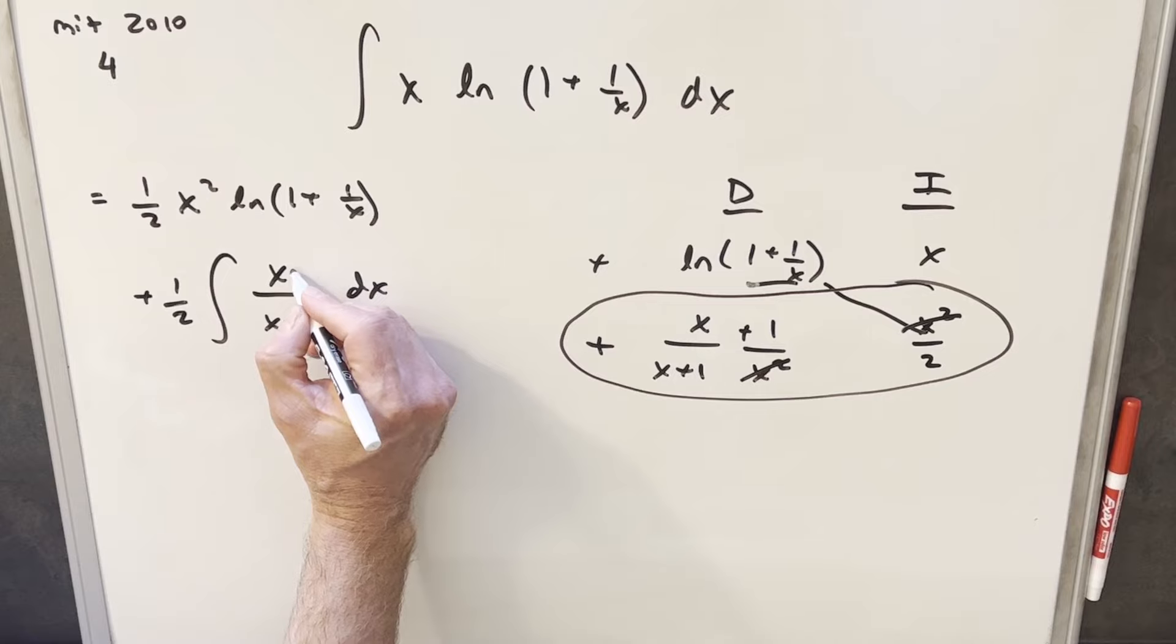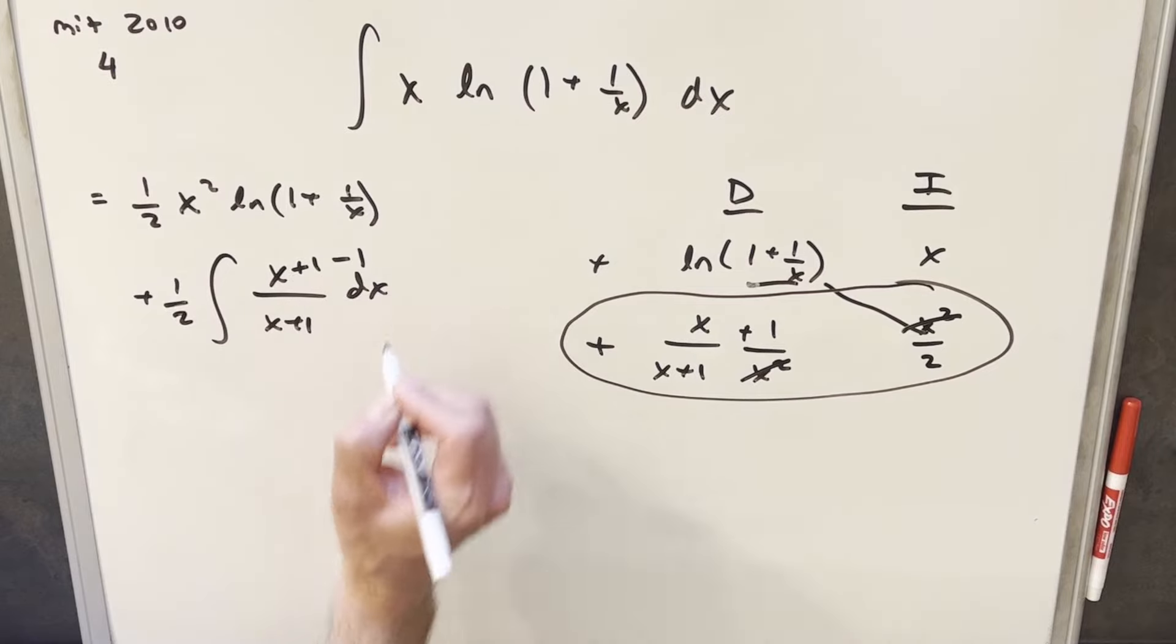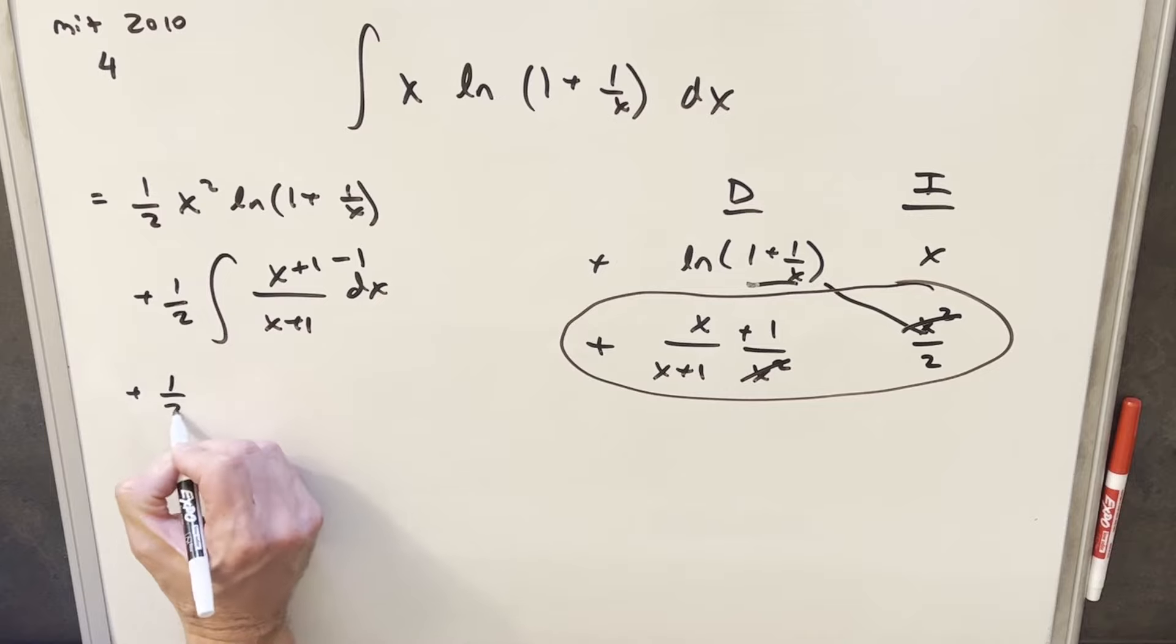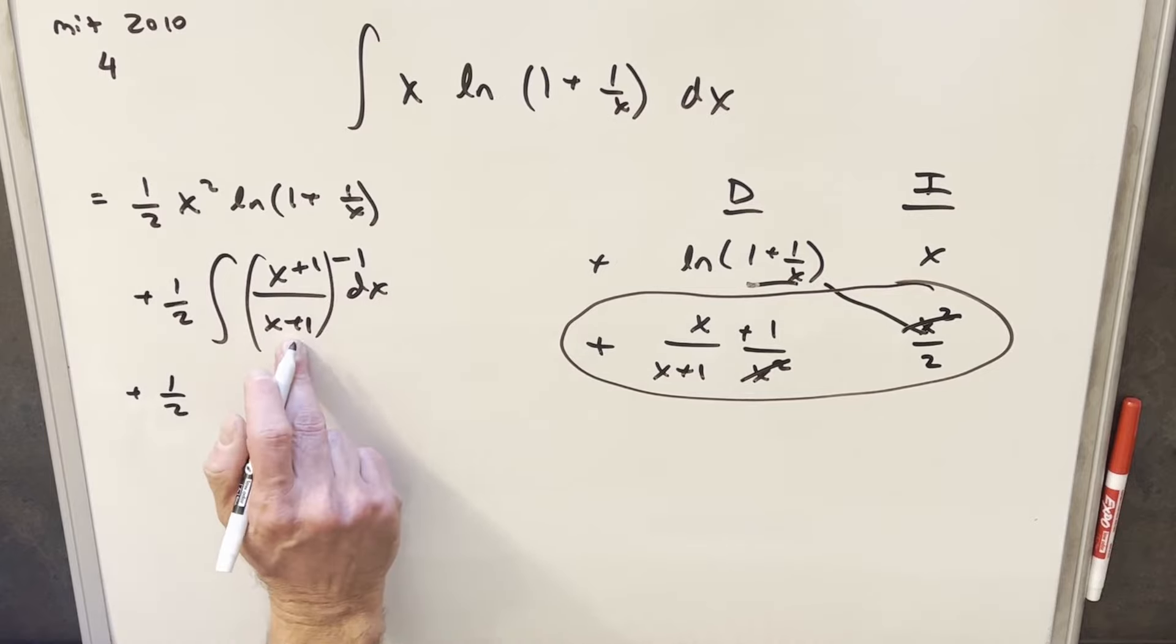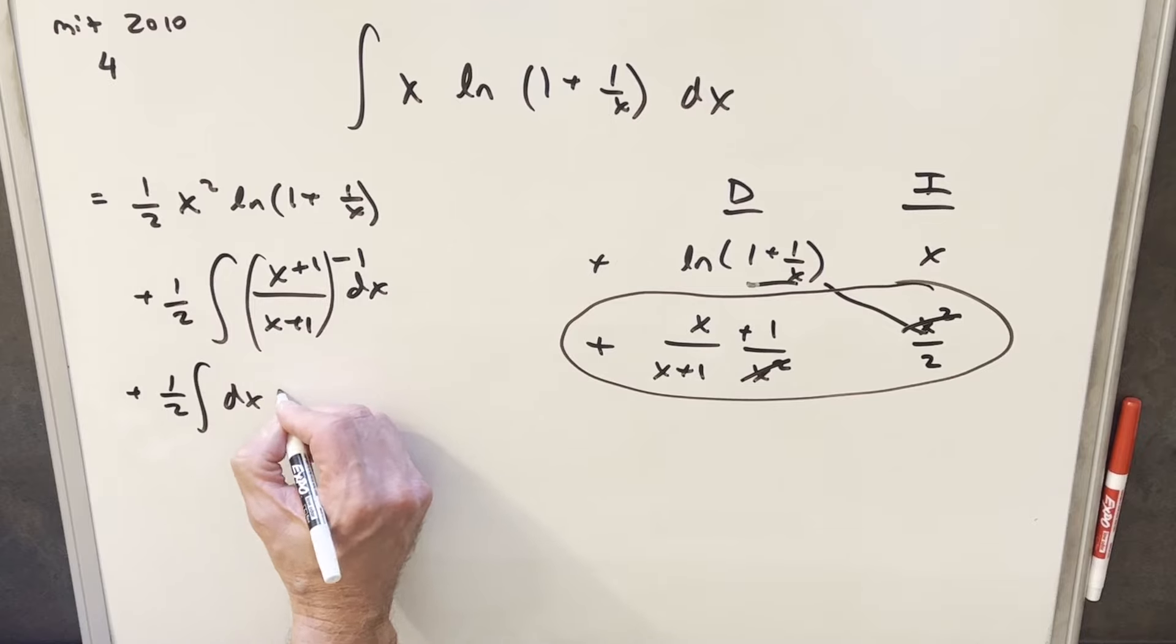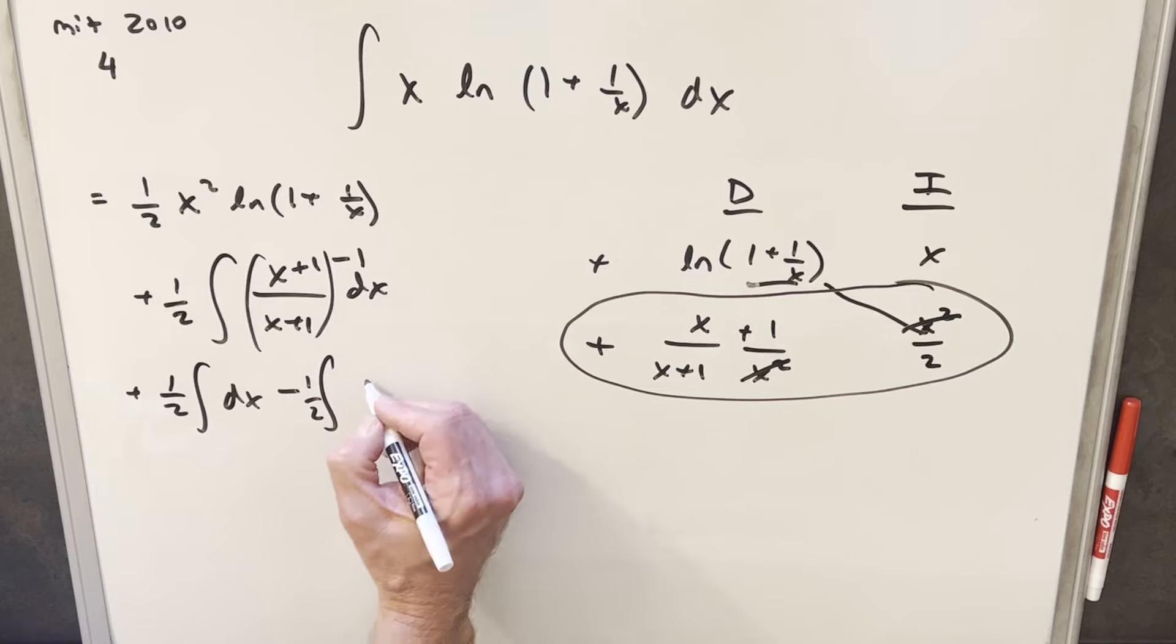Now to take care of this integral, what I'm going to do, I'm just going to add a 1 and subtract a 1. So noticing if I break that up, this first piece here, x plus 1 over x plus 1 is just going to be 1, so we're integrating dx, but we have this minus 1, so we're integrating here 1 half, just dx over x plus 1.